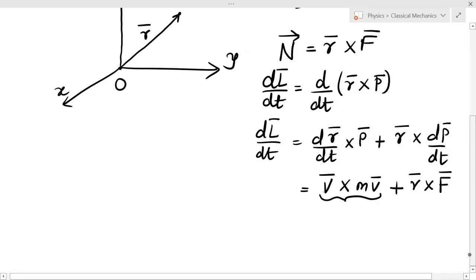Now look at this. What is v̄ × mv̄? It must be zero, because v̄ and v̄ are the same vectors and the angle between these two vectors will be zero, hence sine zero is zero. So what I remain with is r̄ × F̄, but we have already defined that r̄ × F̄ is our torque, N̄.